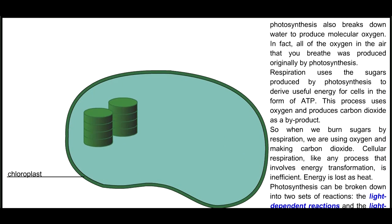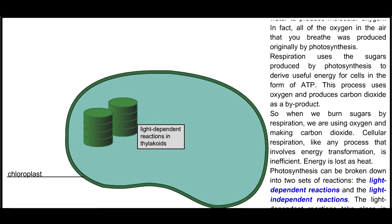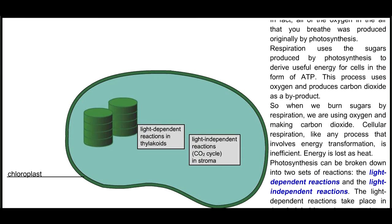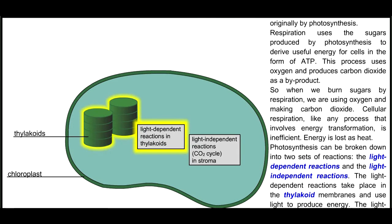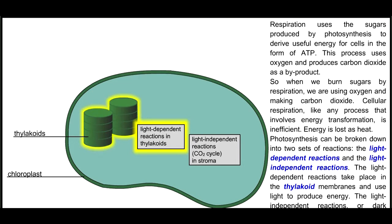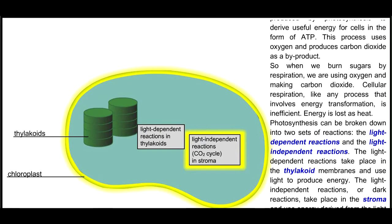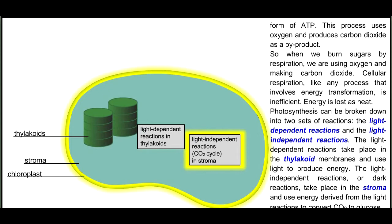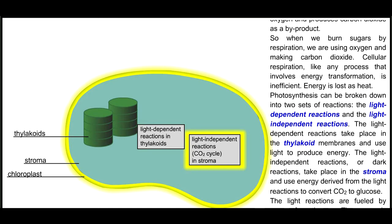Photosynthesis can be broken down into two sets of reactions: the light-dependent reactions and the light-independent reactions. The light-dependent reactions take place in the thylakoid membranes and use light to produce energy. The light-independent reactions or dark reactions take place in the stroma and use energy derived from the light reactions to convert CO2 to glucose.